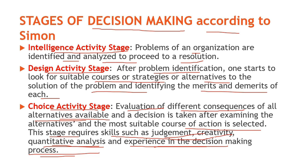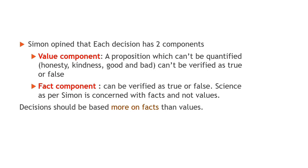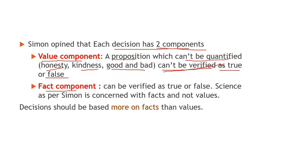Herbert Simon opined that each decision has two components. Pehla hota hai value component, aur doosra hota hai fact component. Value component is a proposition which cannot be quantified and can't be verified as true or false. Value component decision ka woh part hota hai jo measure nahi kiya ja sakta, ya quantify nahi kiya ja sakta — jaisi ki qualities like honesty, kindness, ya good and bad. In qualities ko hum measure nahi kar sakte, aur nahi hum inko verify kar sakte hai ki ye true hai ya false, kyunki value sab ki personal judgment par based hoti hai.